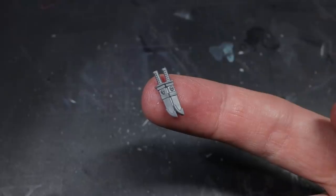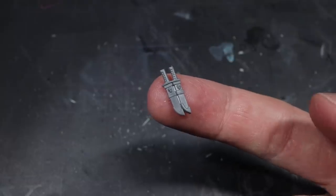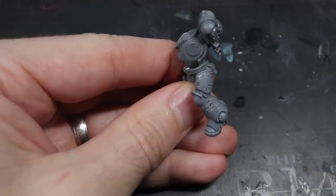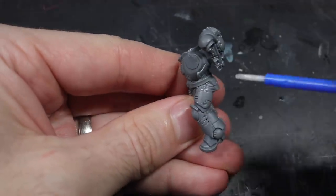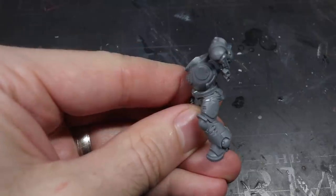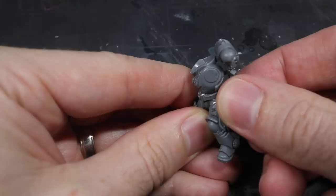When it comes to Space Marine chapters, if the name has a weapon in it, then you can be guaranteed that I would include that weapon on the model somehow. The cruel blades were no exception. I didn't want to go down the whole route of using swords here as it would be difficult to recreate this theme across an entire army. Instead I chose to use the paired knives from the Primaris Incursors kit. These fit nicely onto the thighs of the Space Marine and satisfy the blades part of the chapters name.